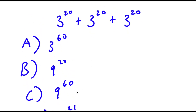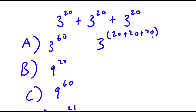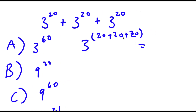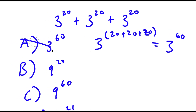Alright, so let's go over all of these answer choices. For answer choice A, 3 to the power of 60 — how you get this is you simply keep the base the same and you add the exponents. So you have 3 to the power of 20 plus 20 plus 20, and 20 plus 20 plus 20 is 60, so this results in 3 to the power of 60. And this method is actually wrong, because that's not the way to add exponents.